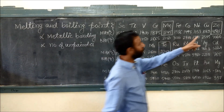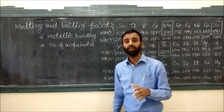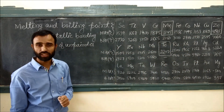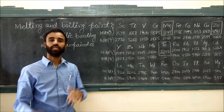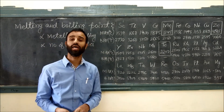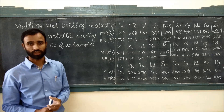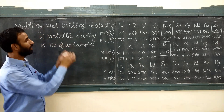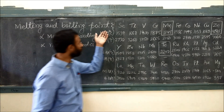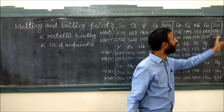For zinc, why is its melting point lowest? Because in zinc, as per its electronic configuration, it is D10, meaning it has no unpaired electrons. That's why its metallic bonding is the weakest.